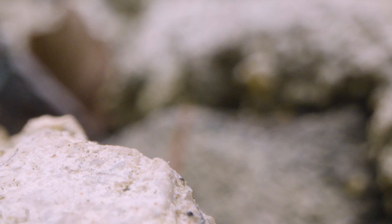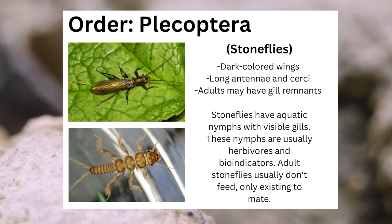Insects in the order Plecoptera, also known as stoneflies, are notable because of their dark-colored wings, their long antennae and cerci, and their adult form which may have gill remnants. Stoneflies have aquatic nymphs with visible gills. These nymphs are usually herbivores and are bio-indicators. An adult stonefly usually does not feed and only exists to breed.